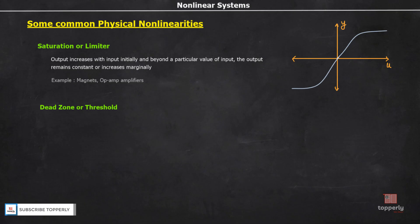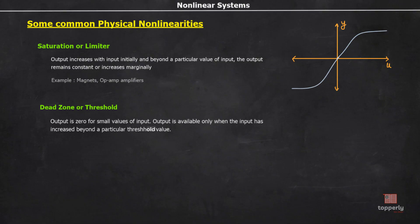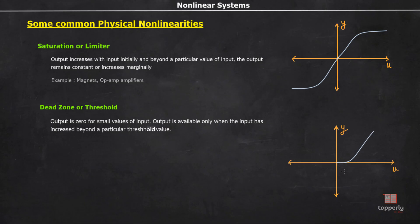The next physical nonlinearity is dead zone or threshold. There are many devices where the output will be zero for small values of input. The output will be available only when the input has increased beyond a particular threshold value. If we look at the characteristics of a dead zone, initially the output will be zero for small values of input and then it increases linearly, similarly in the other direction also. Diodes are an example for this type of nonlinearity. For example, in the case of a silicon diode, if the applied voltage across the diode is less than 0.7V, then the output is zero because the diode is in off condition. Beyond that, the diode is in on condition.